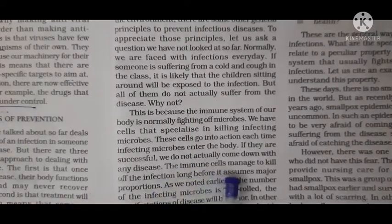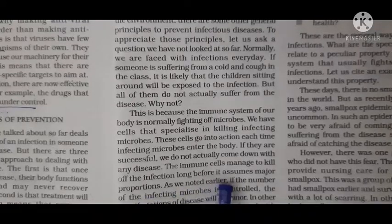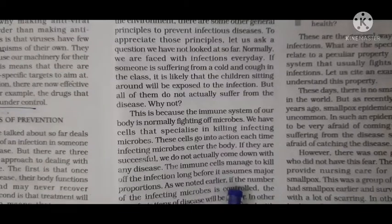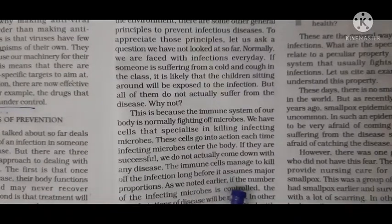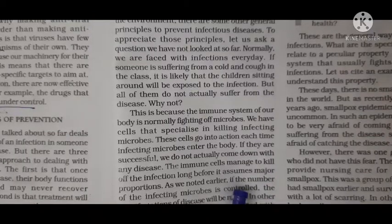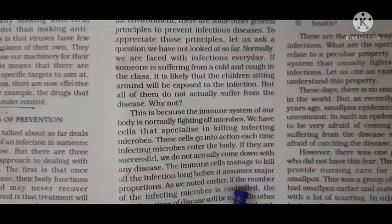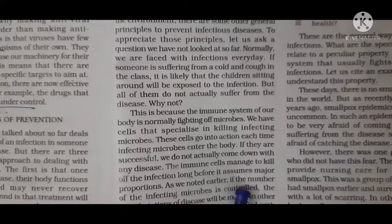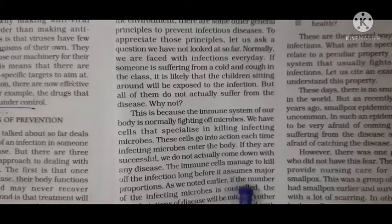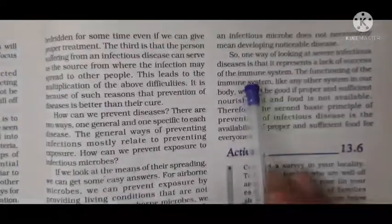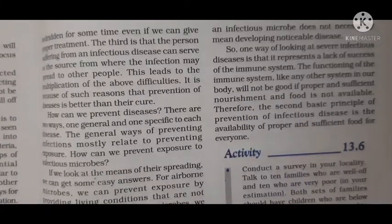Immune cells manage to kill infections long before they assume major proportions. If the number of microbes is more but the immune system is strong, more cells are produced and will kill all the microbes, so the severity of disease will be less or the person may not get the disease at all. But if the immune system is weak, very few cells are produced and they cannot kill all the microbes, so some microbes remain, multiply, and the person gets the disease.